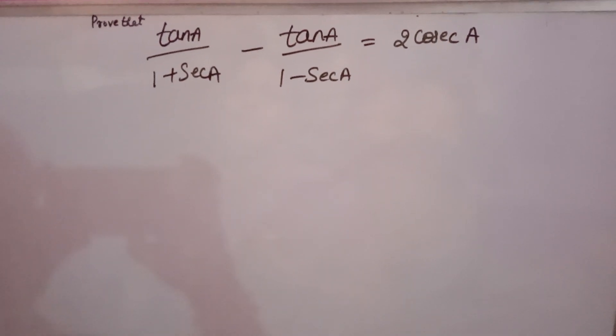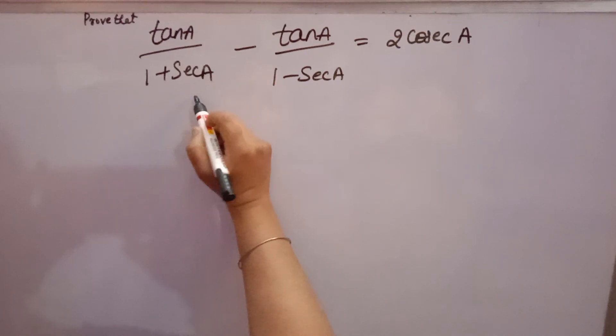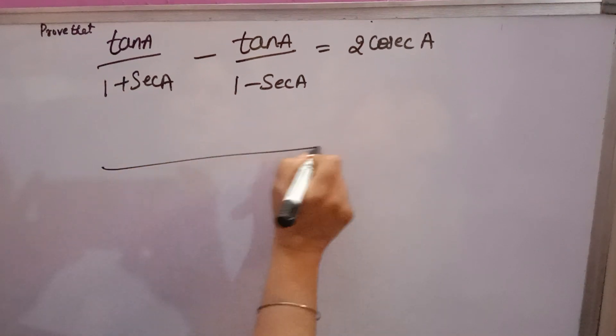See one more important question of trigonometry. Prove that tan A over 1 plus sec A minus tan A over 1 minus sec A is equal to 2 cosec A.